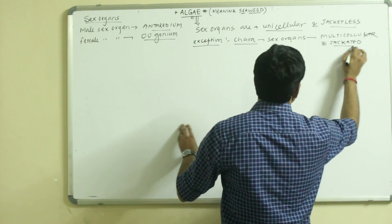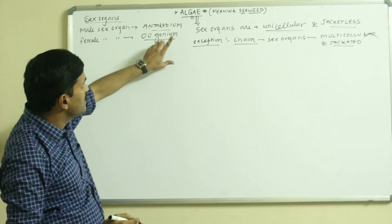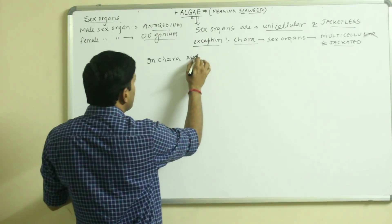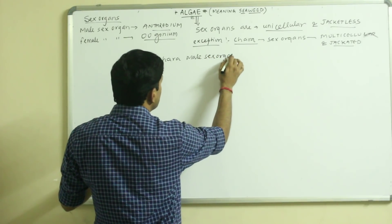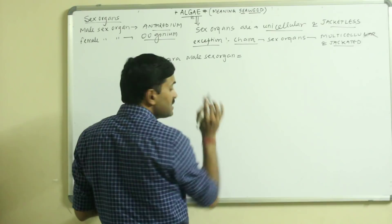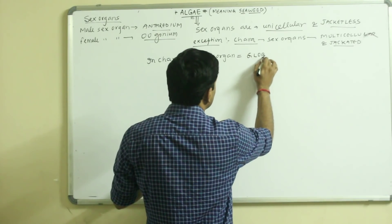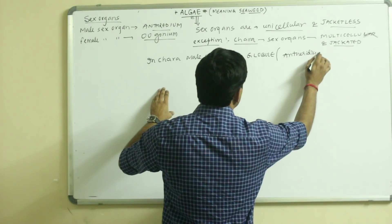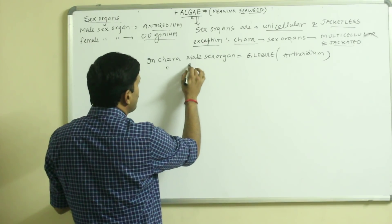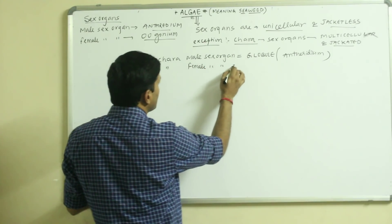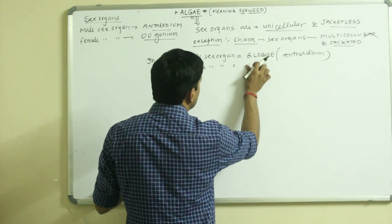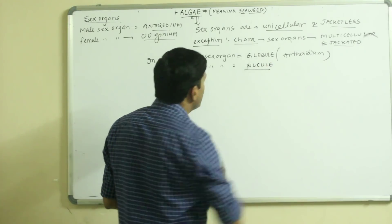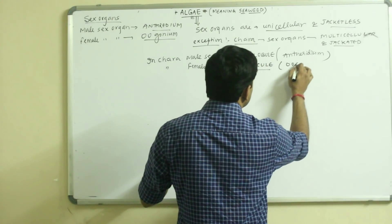In Chara, the male sex organ is called globule — in simple terms we can also call it antheridium — and the female sex organ in Chara is also called oogonium.